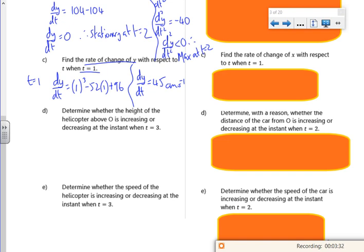So determine if it's increasing or decreasing when t is 3. So if I check what the dy/dt is, because y is the height, I want to see if the change in height is going with the gradient of that graph. So when t is 3,